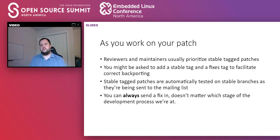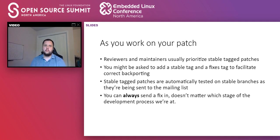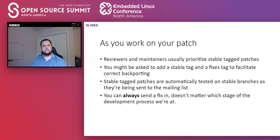We also have a simple bot that fetches stable-tagged patches from mailing lists and attempts to apply them on the various stable branches where the stable and fixes tags indicate they should be. That bot will send you an alert if something goes wrong — for example, if a patch should be applied to the 4.14 stable branch and the bot couldn't apply it, you'll receive a mail describing what happened and possibly suggesting which patches are missing. We found that sending these alerts early, while the patch is still in development, gets more responses than waiting two or three weeks later.